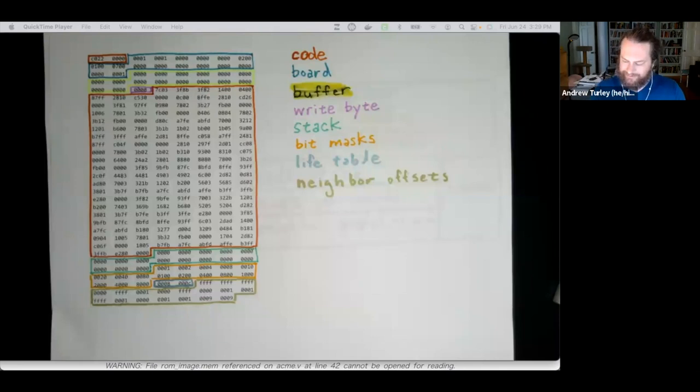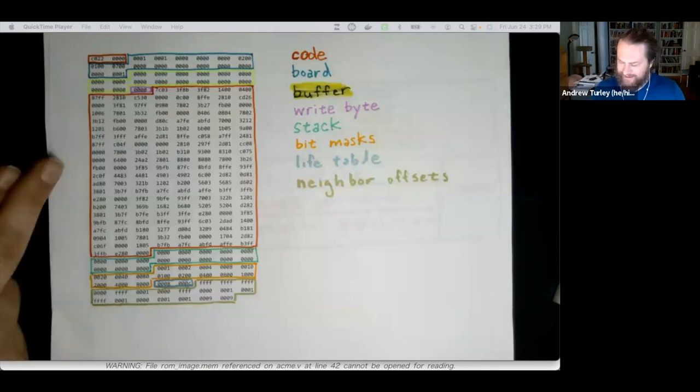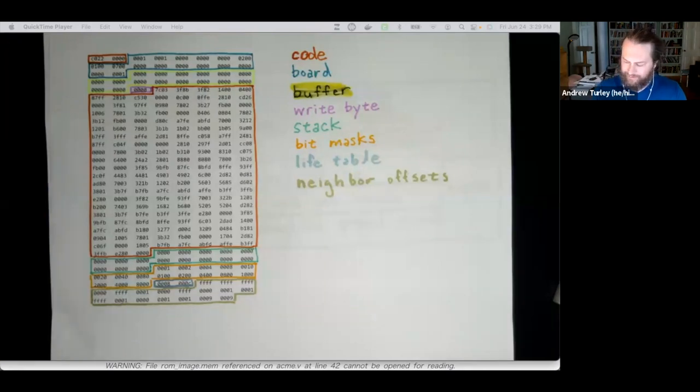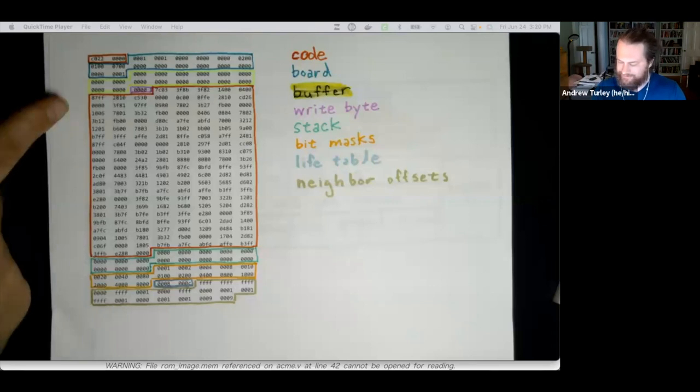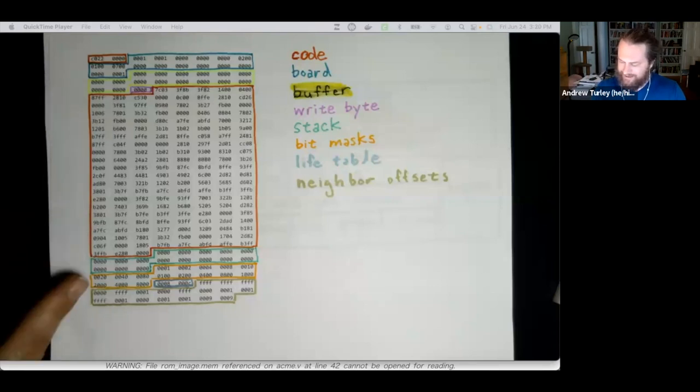So at the very beginning, we have a little bit of code that jumps into the main part of the program. And then we have the board represented here, we have the buffer that we used represented here, big chunks of code, and then the stack, and then a few pieces of data that I'll talk about here in a minute.